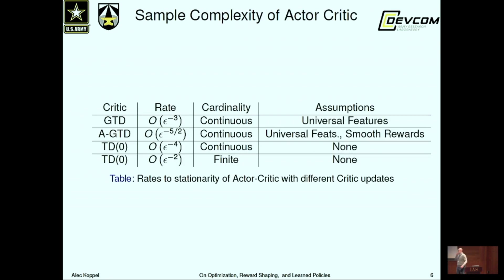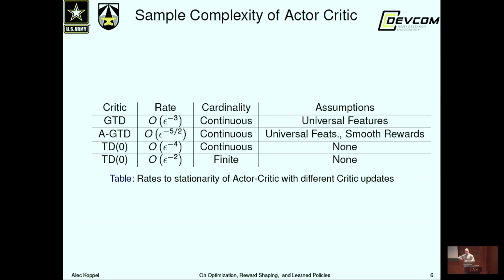Another recent result is convergence rates for actor-critic algorithms. Actor-critic is a variant of policy search where instead of Monte Carlo rollouts for the Q function, you run a two-timescale scheme where in the inner loop you estimate the Q function online. We assume the Q function has a linear basis expansion with universal features — for example, an RBF network with a large enough number of features. The interesting point is that the convergence rate to stationarity is bottlenecked by the particular critic method you use.